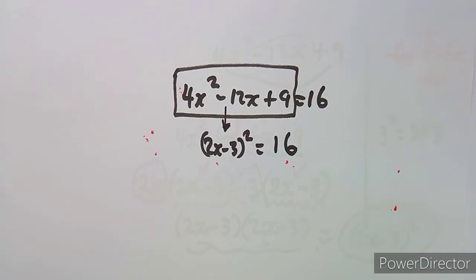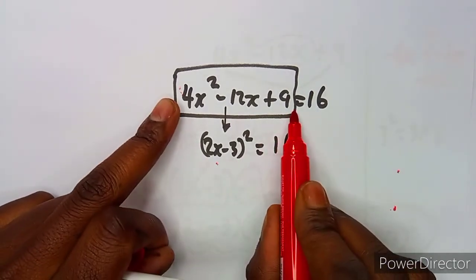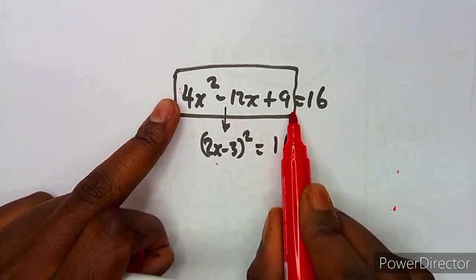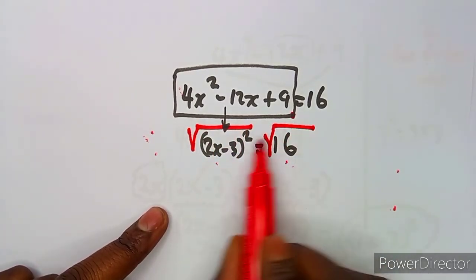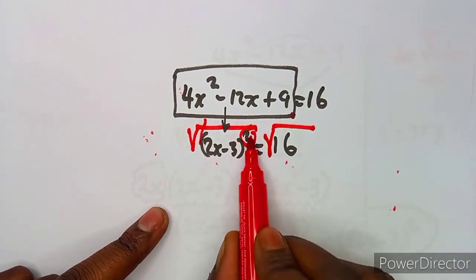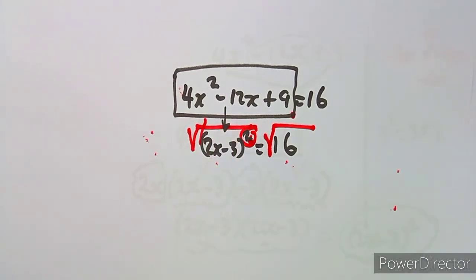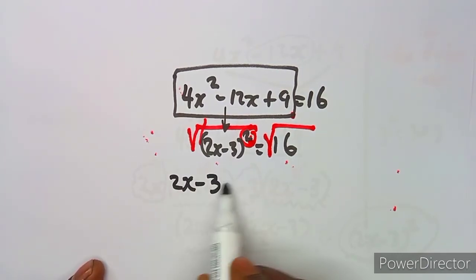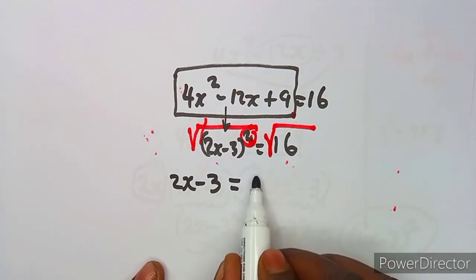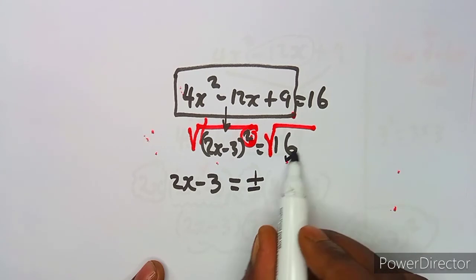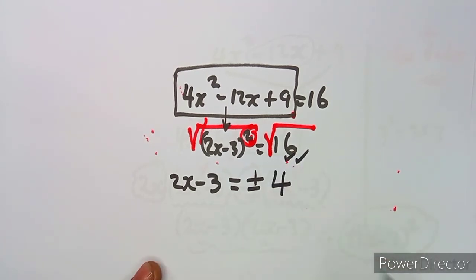We now have a normal equation with a bracket squared. There's no need to expand, because that would just take us back to the start. To remove the exponent of 2, we introduce a square root on both sides. That gives us 2x minus 3 equals the square root of 16. The square root of any number is plus or minus, so the square root of 16 is plus or minus 4.